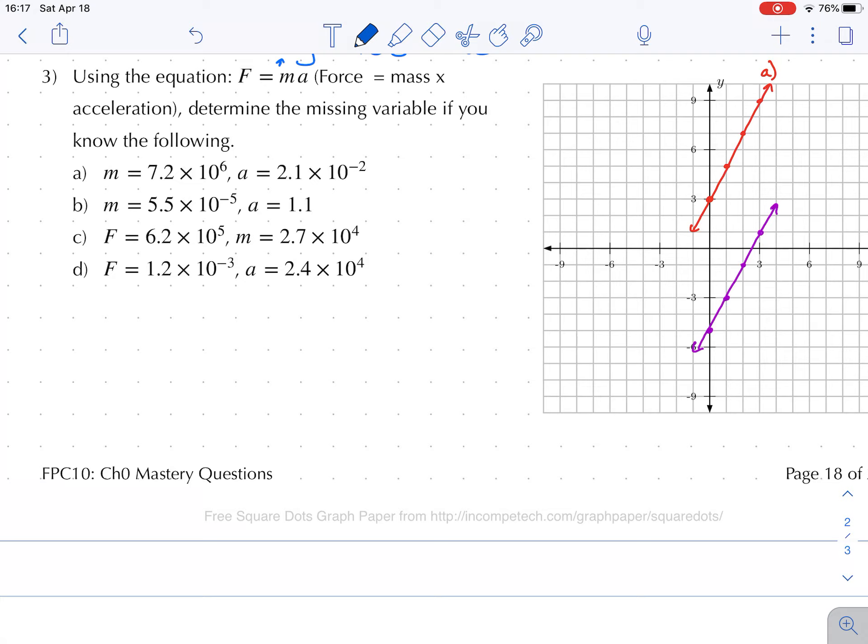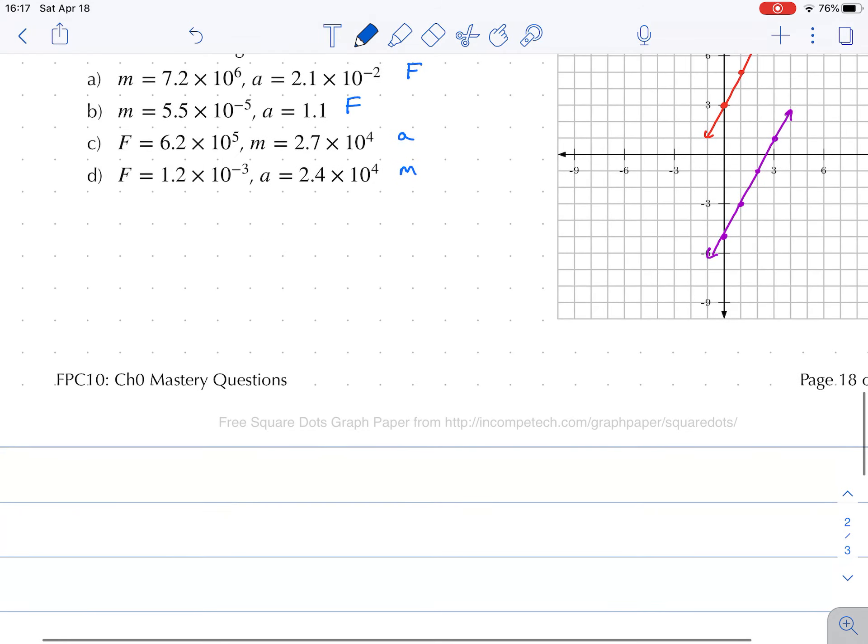All right, let's take a look at question number three. Using the equation force equals mass times acceleration, determine the missing variable. So in letter A, we're asked to find out the force. Letter B, we have our mass and acceleration where we need to find the force. Letter C, we have the force and the mass, we're asked to find the acceleration. And letter D, we have the force and the acceleration, we're asked to find the mass. All right, so let's do letter A.